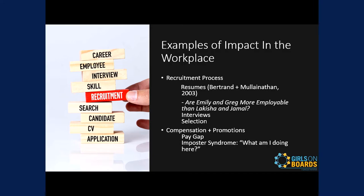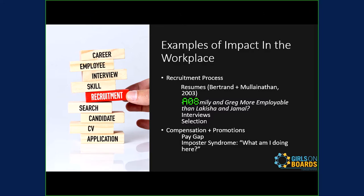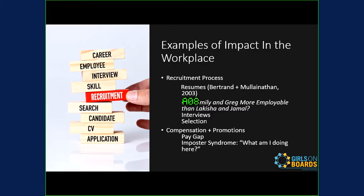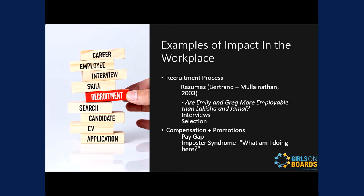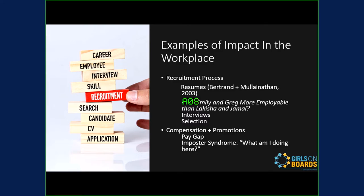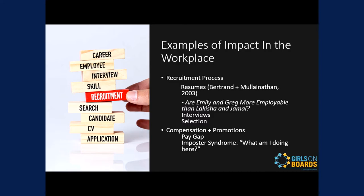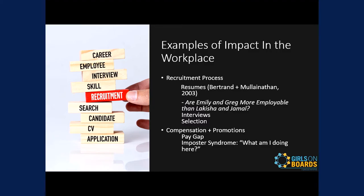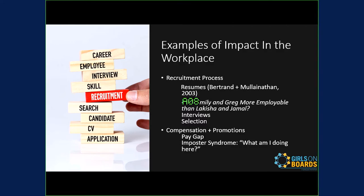We all have biases — every single one of us. We need biases to survive. But we're looking at what happens when they create negative consequences for specific groups. We know there's a pay gap — 87 cents to the dollar. Let's talk about equitable pay, not just equal pay. And imposter syndrome: those who identify as male tend to self-promote and fight for a larger salary. A study across Canada offered men and women the same job at a very low salary to see how much they'd negotiate. Women negotiated up $5,000. Men negotiated up $20,000.